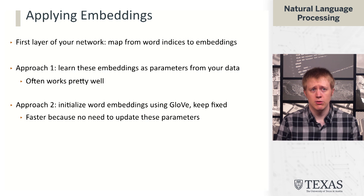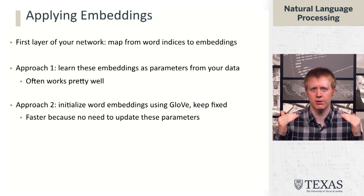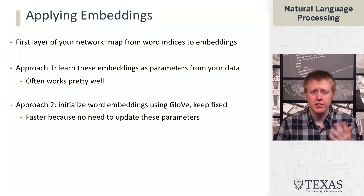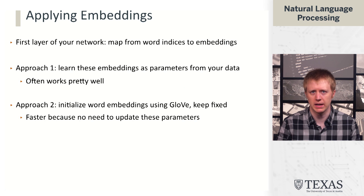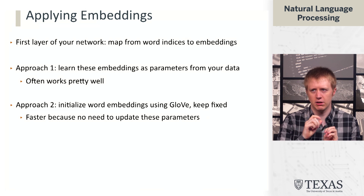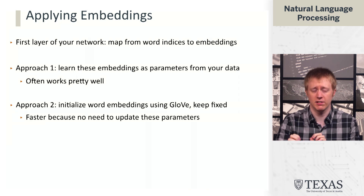The second approach is to initialize these word embeddings with GloVe and then keep them fixed — meaning we take GloVe vectors, or any technique like continuous bag of words or skip-gram. The first layer of the network just looks up that GloVe embedding and sticks it into whatever comes next. This is slightly more efficient from a training perspective because we don't need to update the word embedding layer at all. But it's a little inflexible — if the GloVe objective doesn't learn exactly the right structure for your task, it's not necessarily going to work great.